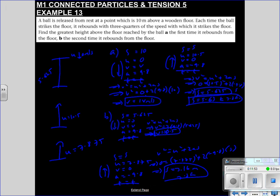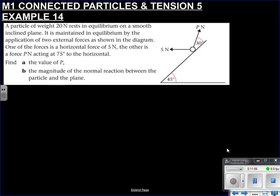Last one. Okay, so a particle of weight 20 newtons. So straight away should we pop that down in there? Yeah I think we should. So 20 is down there. Rests in equilibrium on a smooth inclined plane. It's maintained in equilibrium by application of two external forces, which we can see. One of the forces is horizontal. The other is acting at 75 degrees to the horizontal. Makes sense. Find the value of P. Find the value of the normal reaction. Okay, cool. So a normal reaction is there. Hopefully you're thinking the same as me. Then we need to split our forces up into perpendicular and parallel to the slope.